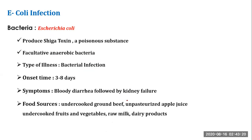The second one is E. coli infection. We know that E. coli is a bacteria that can produce Shiga toxin, which is also a poisonous substance. It is very much poisonous and it is a facultative anaerobic bacteria. Type of illness is bacterial infection, onset time 3 to 8 days. Symptoms include bloody diarrhea and it can lead to kidney failure. Food sources include undercooked ground beef, unpasteurized apple juice, improperly cooked fruits and vegetables, and dairy products.